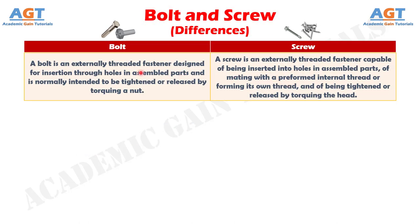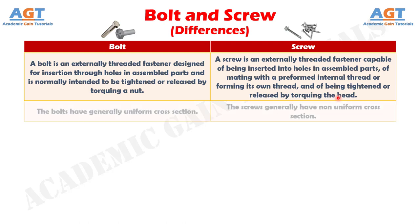Difference number 1: A bolt is an externally threaded fastener designed for insertion through holes in assembled parts and is normally intended to be tightened or released by torquing a nut. Whereas a screw is an externally threaded fastener capable of being inserted into holes in assembled parts, of mating with a preformed internal thread or forming its own thread, and of being tightened or released by torquing the head.